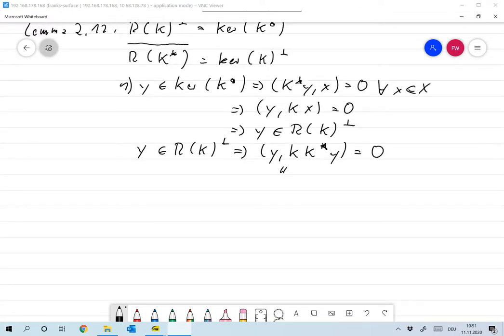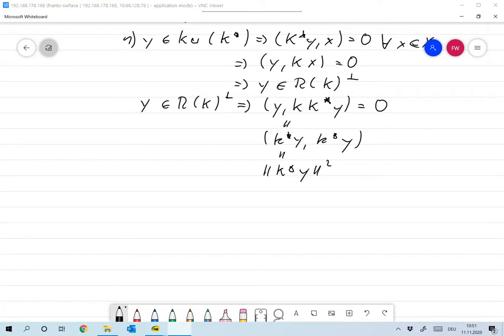And this is exactly the same as K star y. K star y by definition of the adjoint. And that's nothing but the norm of K star y squared. Now, if that's 0, then that means that K star y is 0. And that means that y is in the kernel of K star.